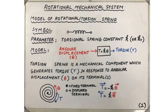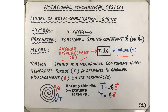Let us begin by discussing the model of the rotational or torsional spring. The symbol resembles that of a coil, and the parameter of the model is the torsional spring constant, represented by the variable k. In its model, the torsional spring accepts angular displacement as the input and produces torque that is proportional to the angular displacement. The output torque T equals k times theta, where k is the torsional spring constant.